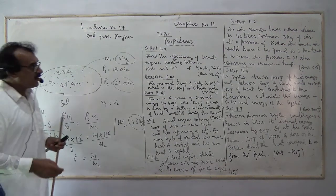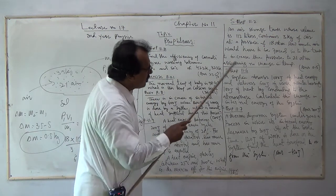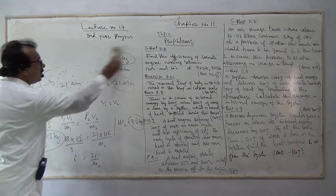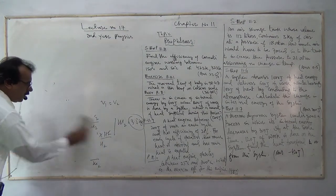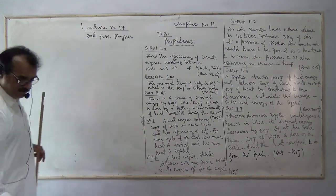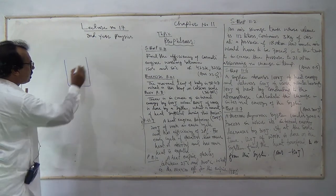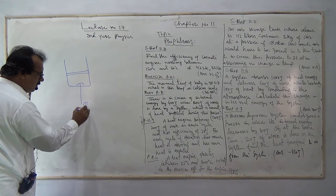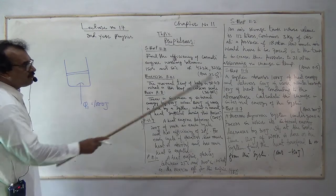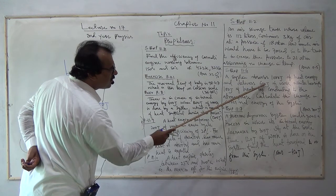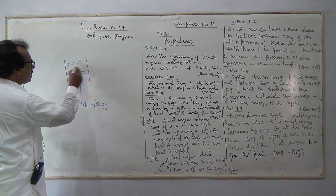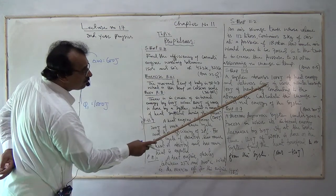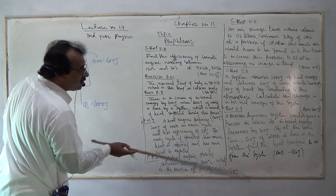The next problem goes on to thermodynamics. A system absorbs 1000 Joules of heat and delivers 600 Joules of work — delta W is equal to 600 Joules — while losing 100 Joules of heat by conduction to a heat sink.